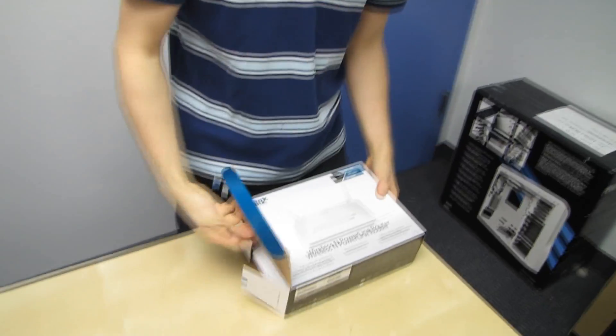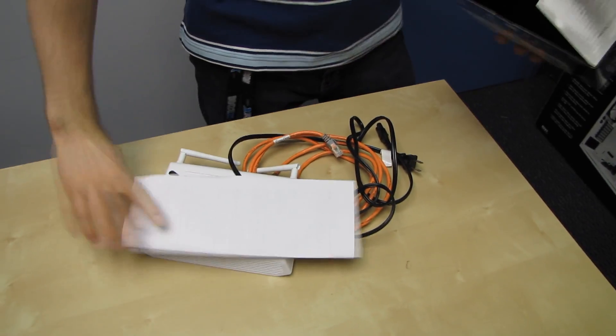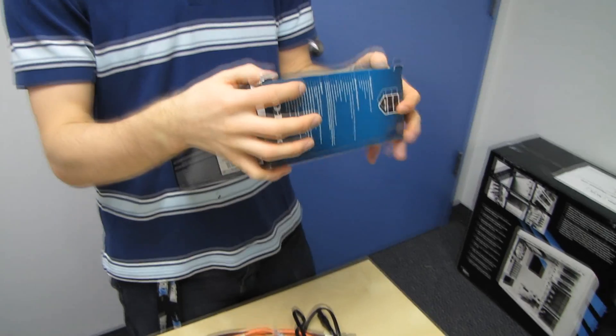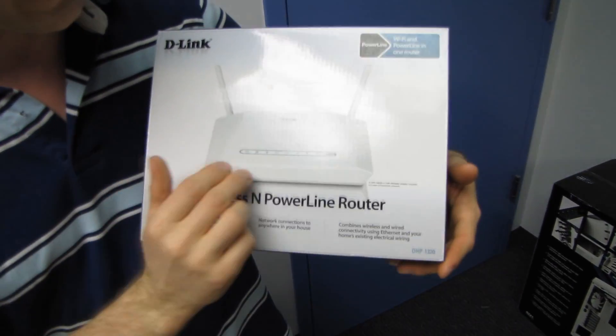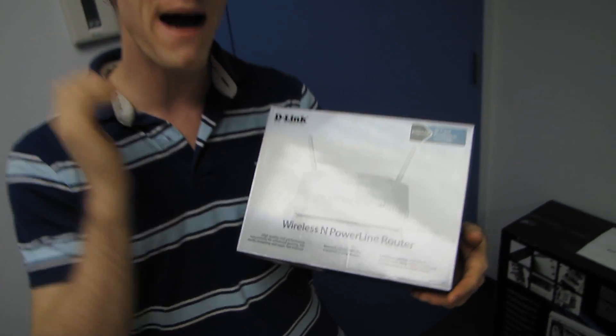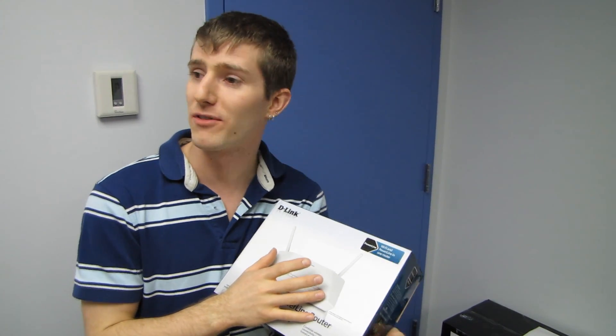But I want to talk about the DHP-1320 and what is special about this particular router. This uses a Qualcomm chipset that allows not only wired and wireless operation, but also power line operation built right into the router using the 1905.1 standard.